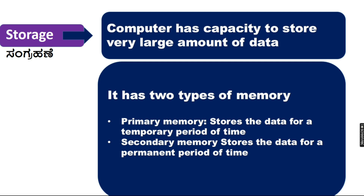Secondary memory includes devices like hard disk, pen drive, and DVD drive. You can save your data, your sheets, and your photos in secondary storage devices so they are stored permanently.